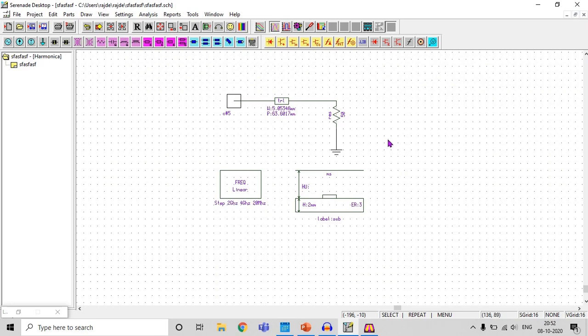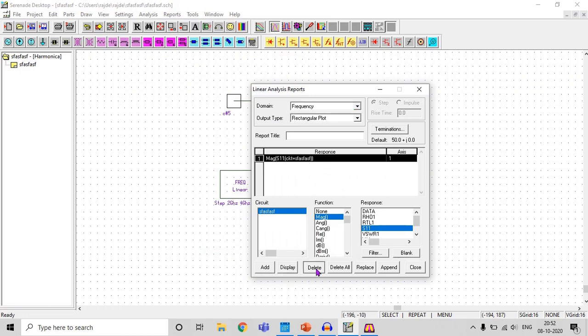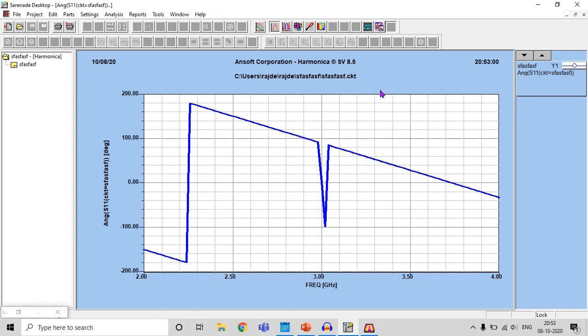Let's try to see the phase of S11 also. So go to report, report editor, delete the previous one, S11, and you can see here I have this highlighted one - this is the angle of S11 - and edit and display. Before displaying it, just guess the value. Yes, right, we need to get a zero degree angle of S11 at 3 gigahertz. So display and see at 3 gigahertz we are getting zero.